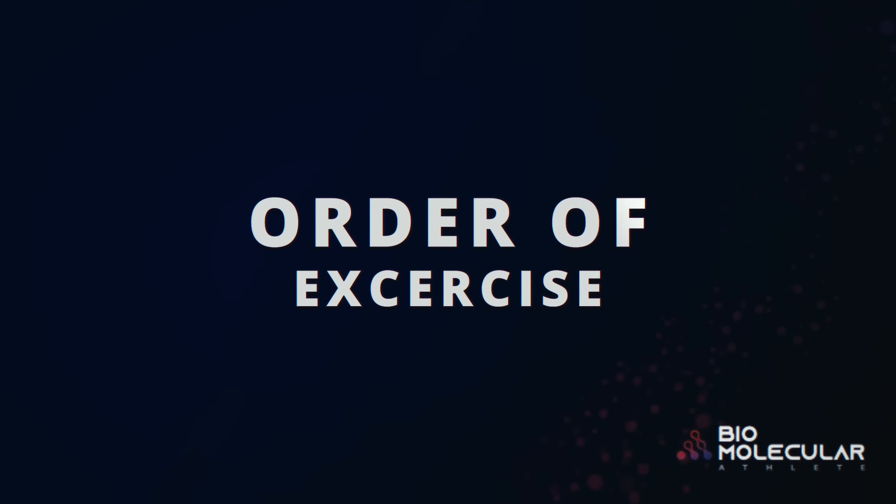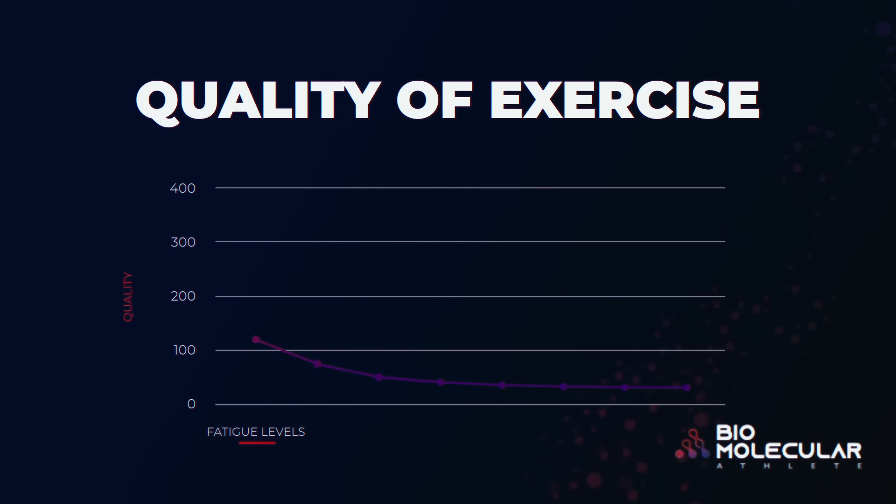The next one is exercise order. Because everything driving power and strength is quality-based, you want to do these at the beginning of your workout. You would not want to do anything fatiguing before this — no cardiovascular training, no repetition-to-failure work. If you do those before and you're now slower, all you've done is practice getting slower. These need to be done when you're fresh because they are the most neurologically demanding.